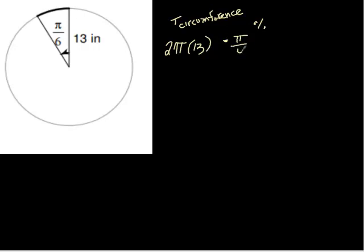We get π/6 divided by 2π. This is, π/6 is the part we got. This is the part we got. This is the portion we got. It was right here. We're looking for this length of this arc length right here.